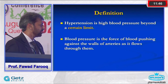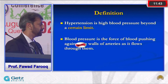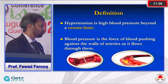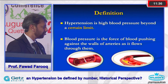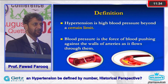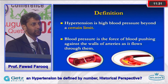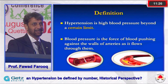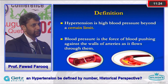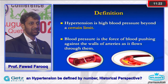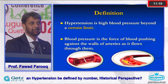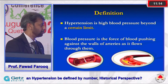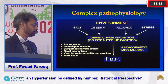Blood pressure is the force exerted on vessels by the contraction of the heart, a combination of cardiac output and peripheral resistance. Yet we are still unable to define the exact limit beyond which it is hypertension, and we remain in a lot of gray areas — pre-hypertensive, high normal, and more.